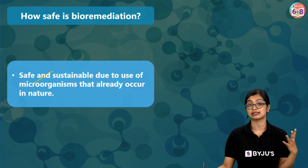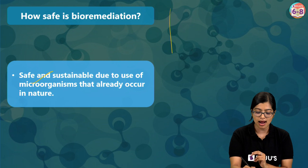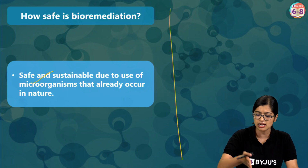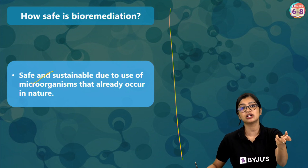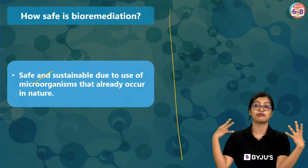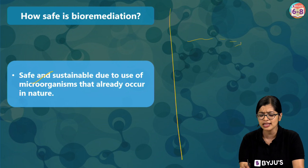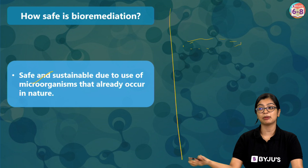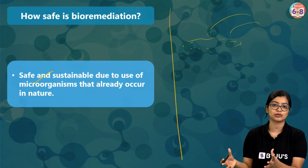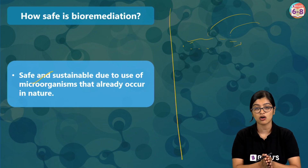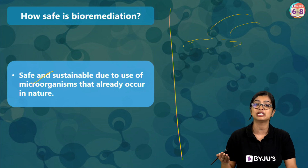Bioremediation is safe and sustainable because we are using living organisms to tackle pollution. But there are various limitations and a lot of research still being done. When using microbes, we know there are good microbes, but there's also the potential that if we overuse them beyond what is naturally present in the habitat — for example, adding too many oil-eating bacteria — we do not really know how they will react to the environment. Scientists are still studying the behavioral aspects of these microbes so it can be fully safe and used at a larger scale.